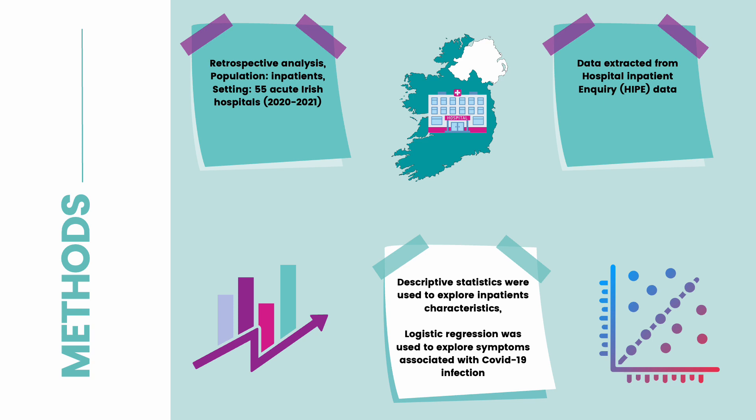This study is a retrospective analysis of inpatient data from 55 acute Irish hospitals in the years 2020 and 2021. The data for this study is extracted from hospital inpatient inquiry data, or the HIB data, which is a health information system including all sorts of information about inpatients in acute Irish hospitals. Descriptive statistics were used to explore the characteristics of the inpatients, and logistic regression was used to explore the symptoms associated with a COVID-19 diagnosis.